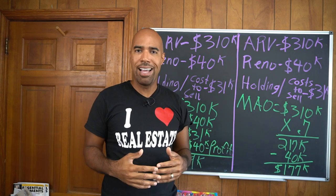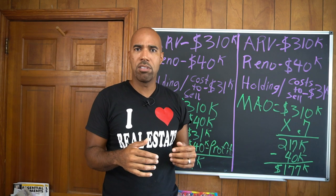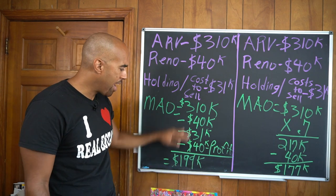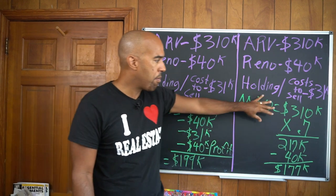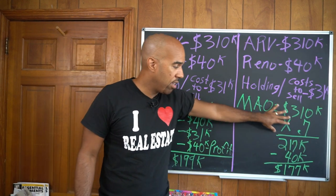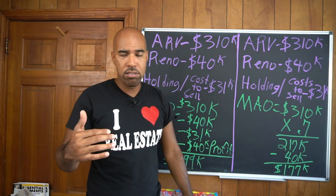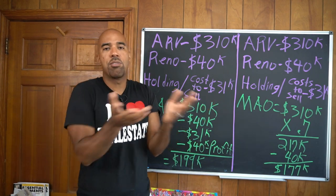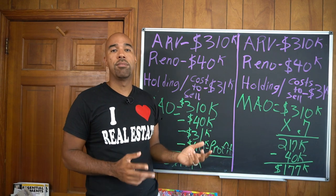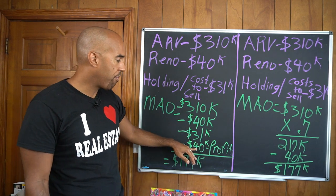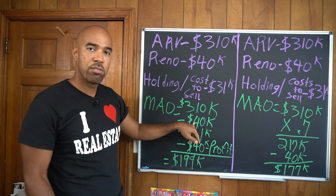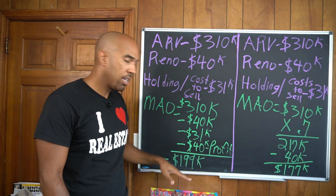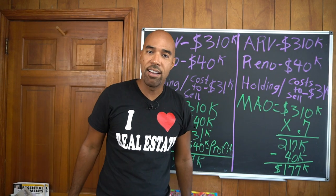We paid $200,000 for this house. Keep in mind as you go to bigger numbers — like a $400,000 house times 0.70 — those numbers just won't work. When you make an offer, remember three things: renovation, holding costs plus closing costs, and profit. If you can remember those three, you can get your offer in. Put profit first — you've got to take care of yourself.